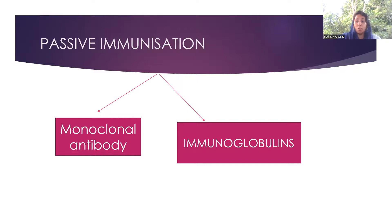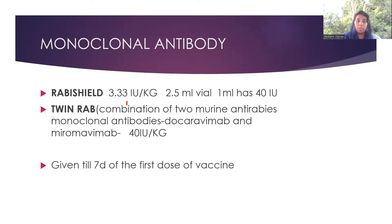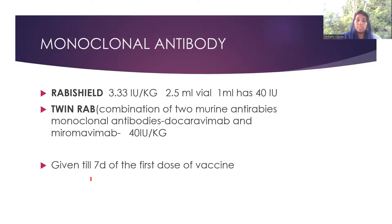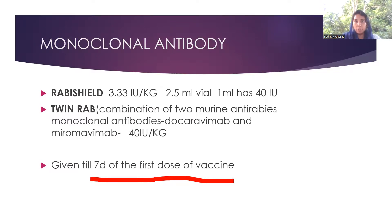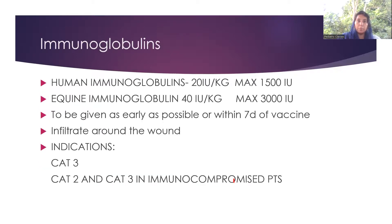For passive immunization, we can consider monoclonal antibodies or immunoglobulins. Monoclonal antibodies — Rabishield — is 3.33 international units per kg, available as 2.5 ml where 1 ml contains around 40 IU. Twinrab is a combination of two murine anti-rabies monoclonal antibodies — daclizumab and miromab — at 40 IU per kg. Monoclonal antibodies can be given up to day seven of the first dose of vaccine. Beyond seven days, the vaccine will already be producing antibodies which can interfere with the response. Give as early as possible.